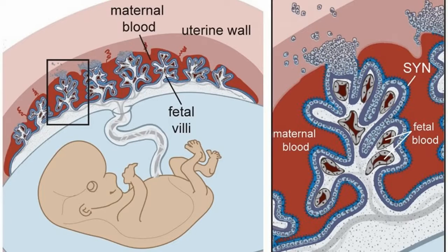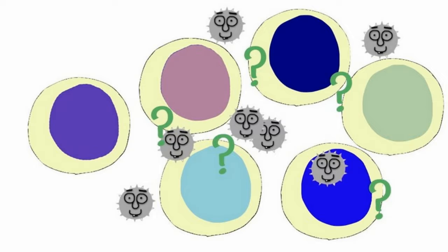Difference between active and passive immunity. Immunity is the capability to identify and respond to a foreign material and eliminate them from the body. When considering the human anatomy and physiology, it consists of two broad arms, namely, innate immunity and adaptive immunity.